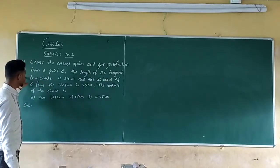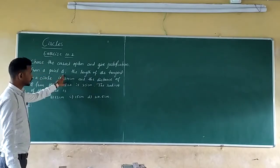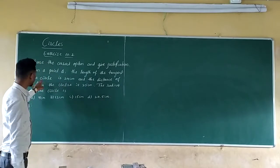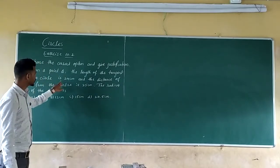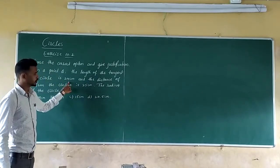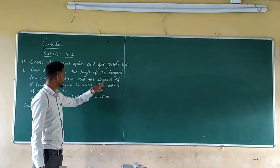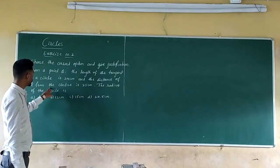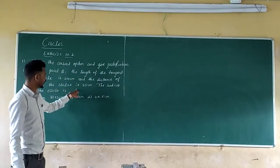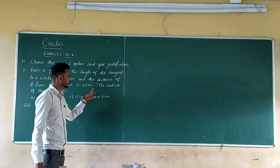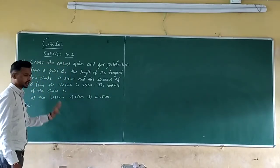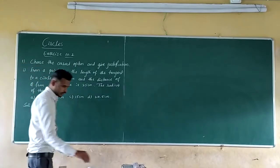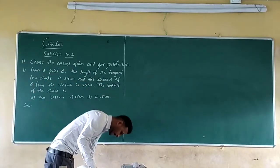First question: from a point Q, the length of the tangent to a circle is 24 cm, and the distance of Q from the center is 25 cm. The radius of this circle is what we need to find. Now let us draw the diagram first.